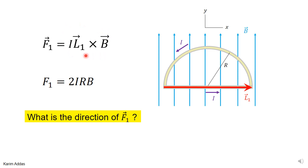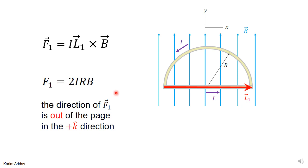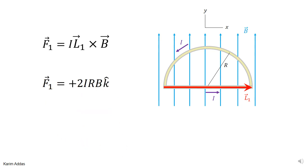What about the direction of the force on side one? The direction is obtained from the cross product formula. L1 points to the right and the magnetic field points upward. The cross product of a vector to the right and a vector in the y-direction gives a result out of the page, which means it's in the +k̂ direction. So combining magnitude and direction, the force is 2IRB in the k̂ direction.